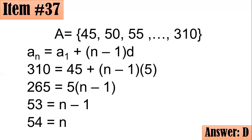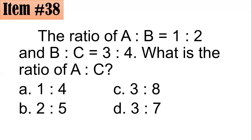Item 38: The ratio of A to B is 1 to 2, and the ratio of B to C is 3 to 4. What is the ratio of A to C? Did you go for 1 to 4, 2 to 5, 3 to 8, or 3 to 7?